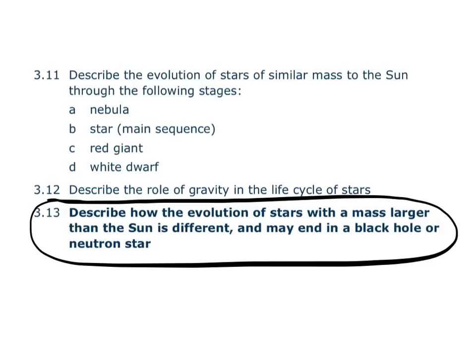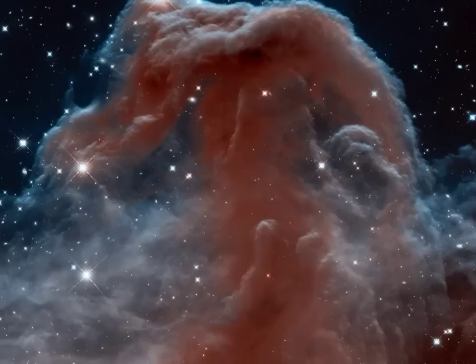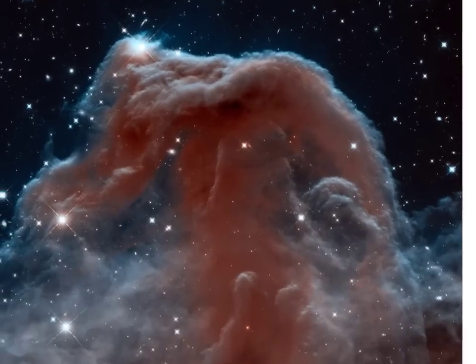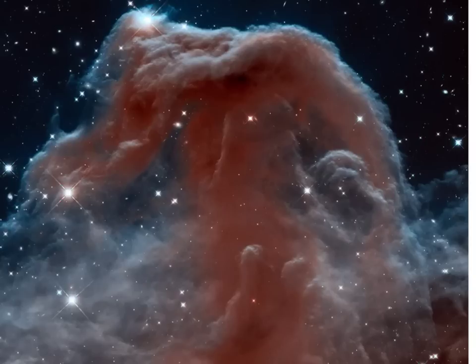They start in the same way, from a stellar nebula, which then becomes a protostar, and then fusion begins, and they start becoming part of the main sequence, fusing hydrogen together. This is a nebula — specifically called the Horsehead or Horseshoe Nebula. You can see that there are stars forming in this nebula, and there's a huge cloud of dust and gas, which is mainly hydrogen.